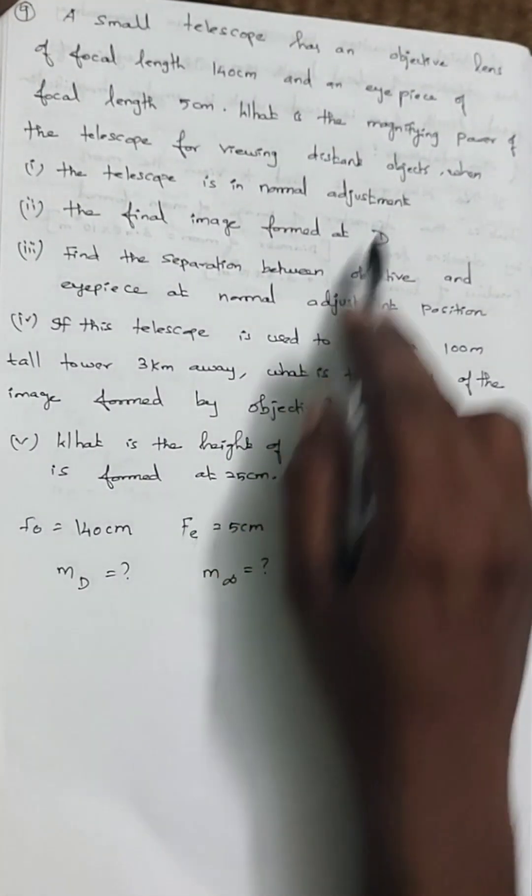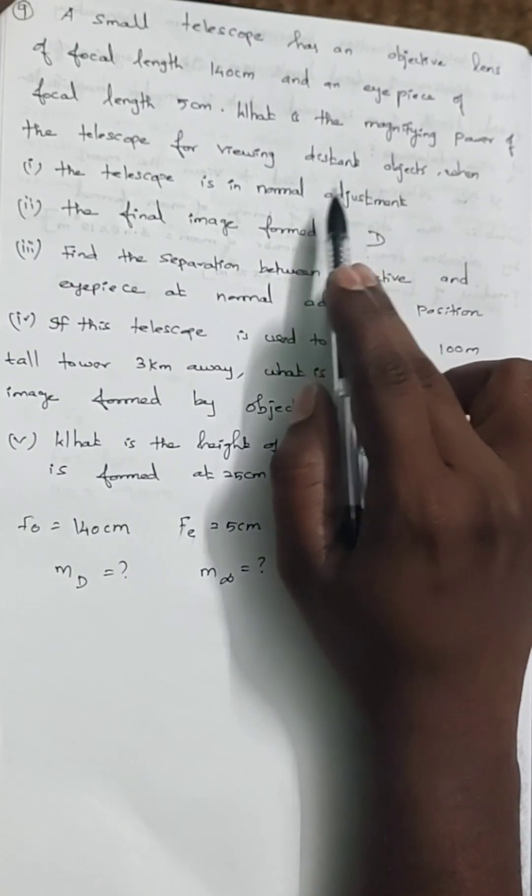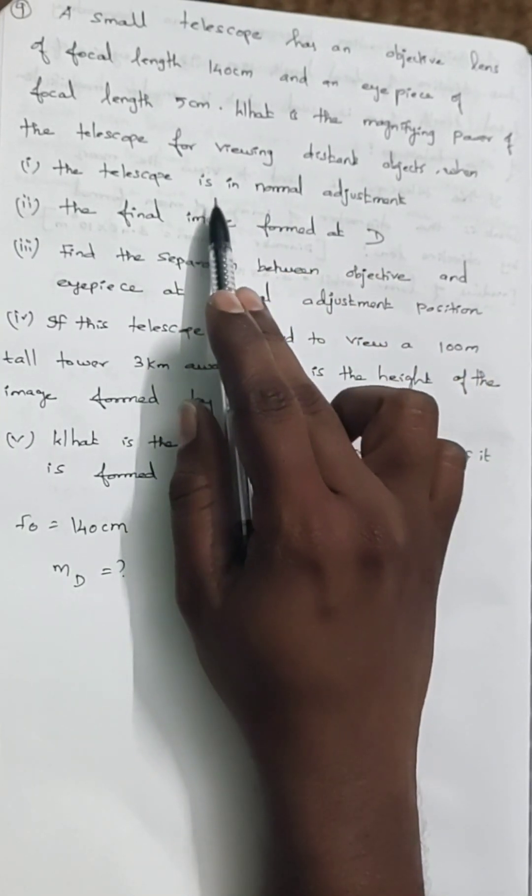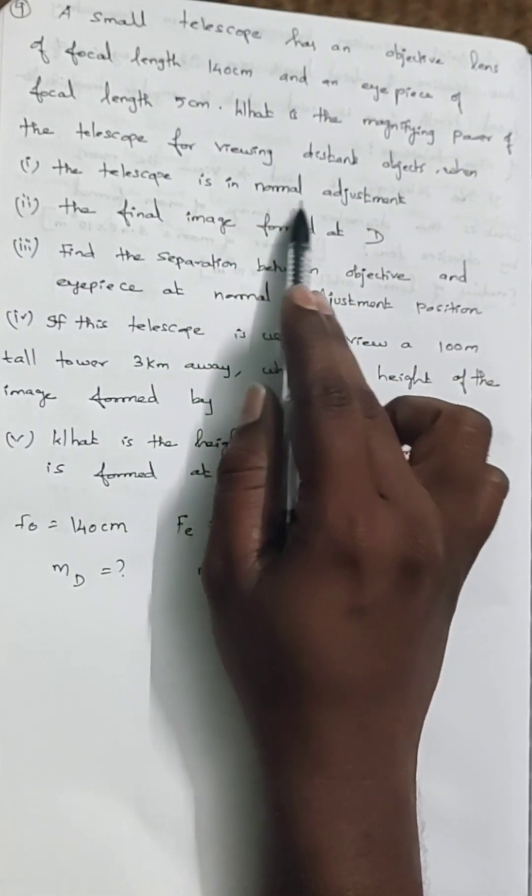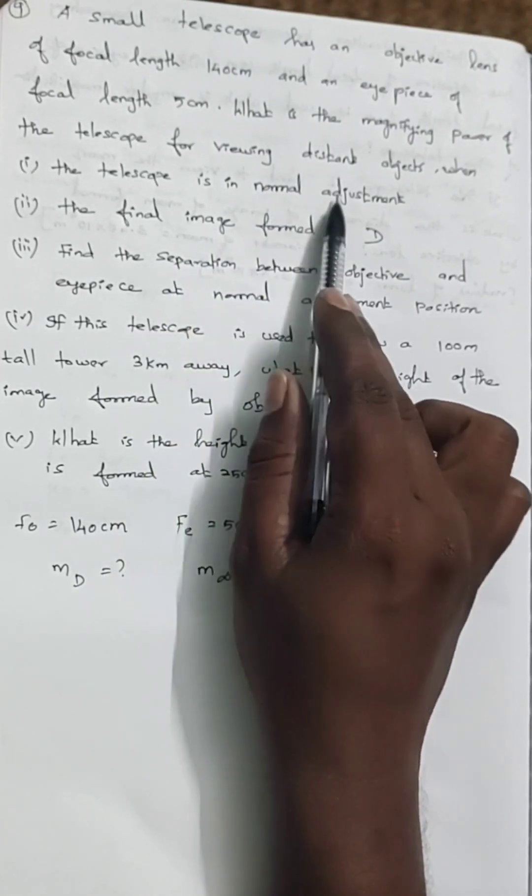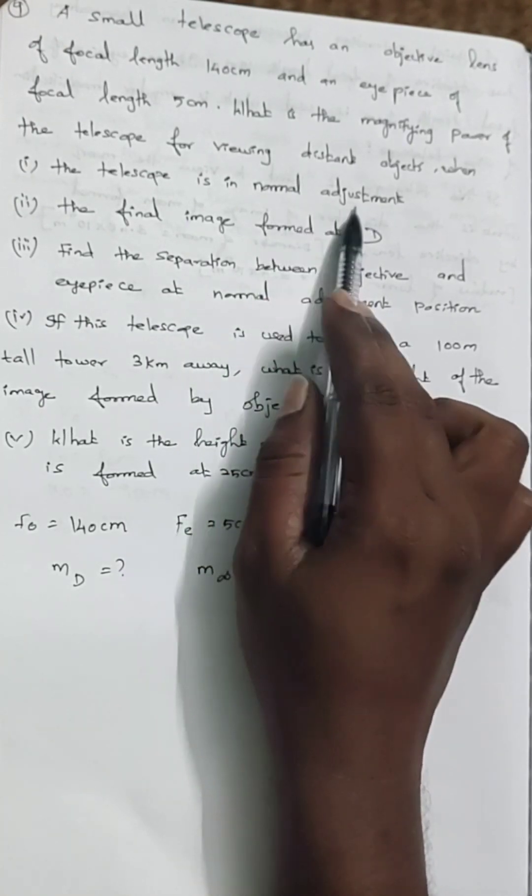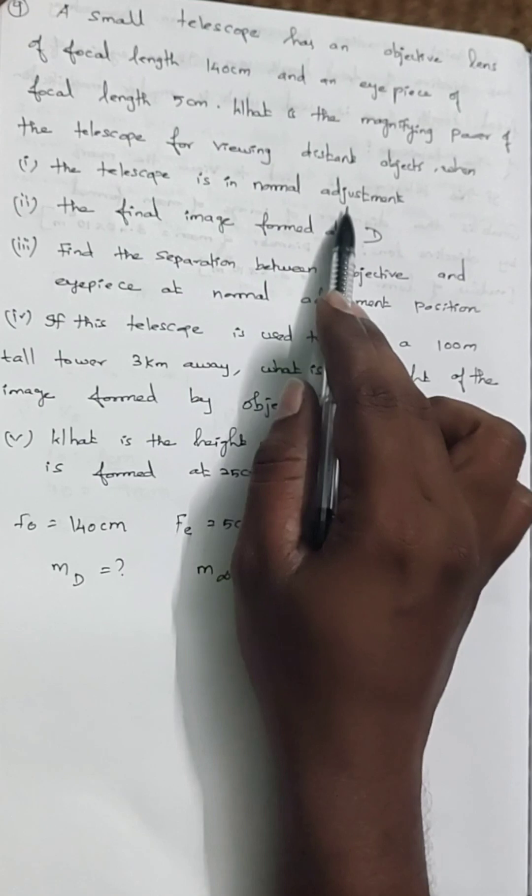We are expected to find the magnifying power of the telescope under two conditions: when the telescope is at normal adjustment position and when the final image is forming at d. Normal adjustment position means image forming at infinity.